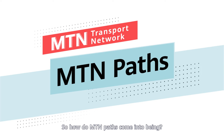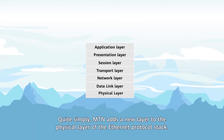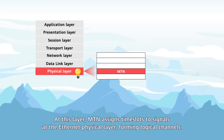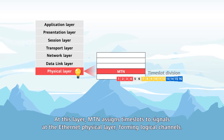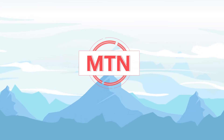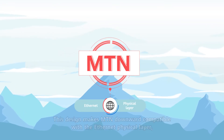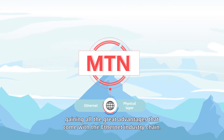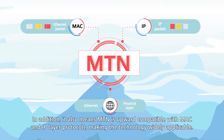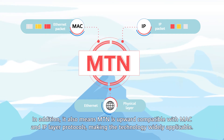So, how do MTN paths come into being? Quite simply, MTN adds a new layer to the physical layer of the Ethernet protocol stack. At this layer, MTN assigns time slots to signals at the Ethernet physical layer, forming logical channels — these channels are MTN paths. This design makes MTN downward compatible with the Ethernet physical layer, gaining all the great advantages of the Ethernet industry chain. In addition, it also means MTN is upward compatible with MAC and IP layer protocols, making the technology widely applicable.